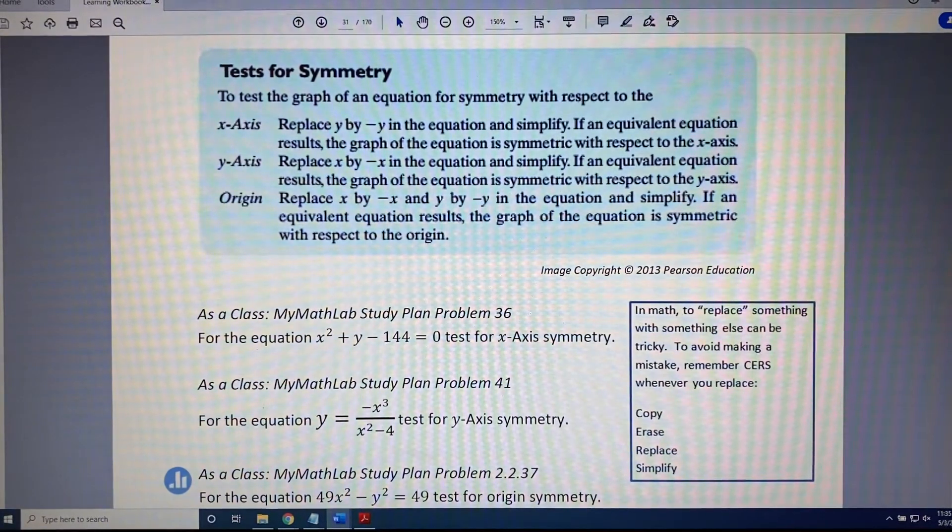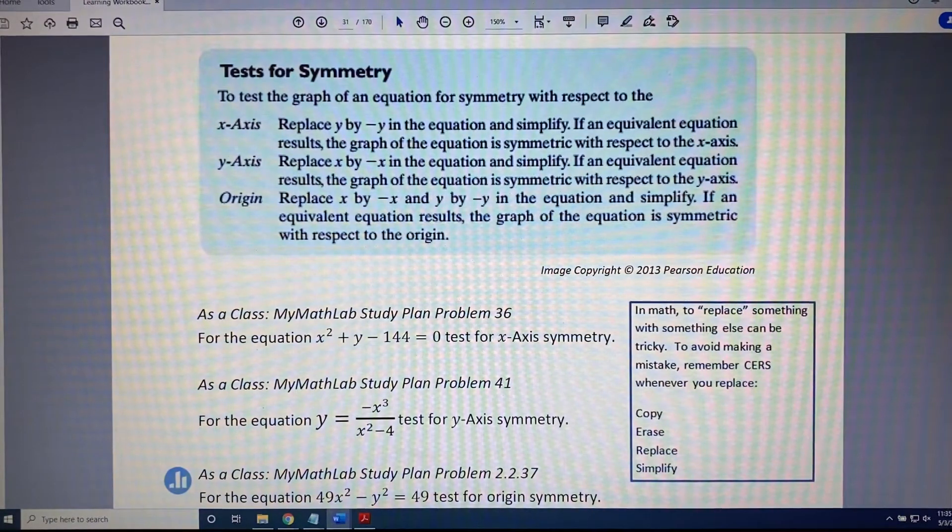In a previous video, we discovered that when a graph has x-symmetry, the y-coordinate changes to its opposite. For y-symmetry, the x-coordinate changes to its opposite. And for origin symmetry, both coordinates change to their opposites.